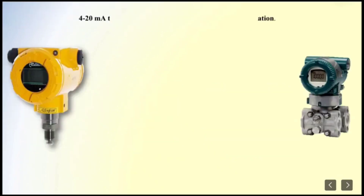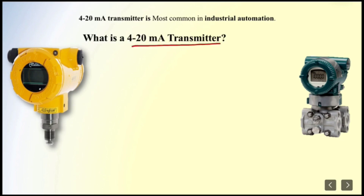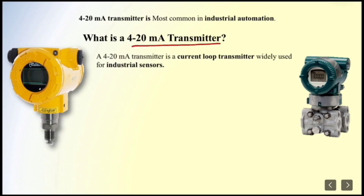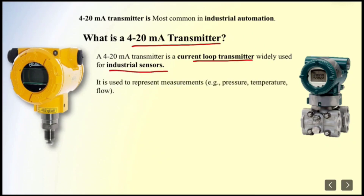The 4 to 20 mA transmitter is used the most in industrial automation. It is a current loop transmitter used for industrial sensors, and these 4 to 20 mA transmitters are used for measurements like pressure, temperature, flow, etc.